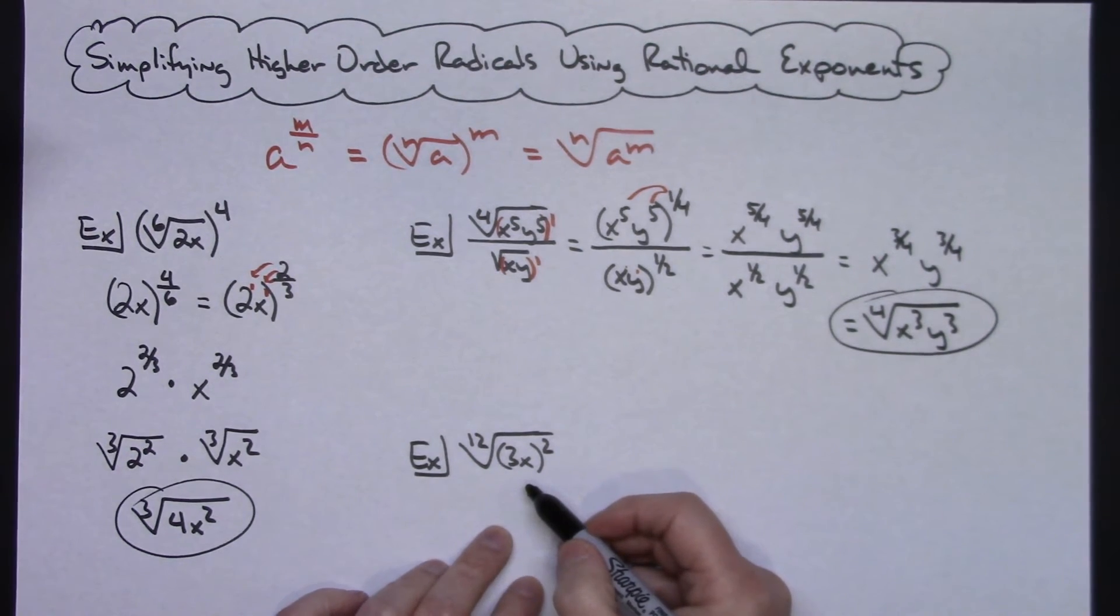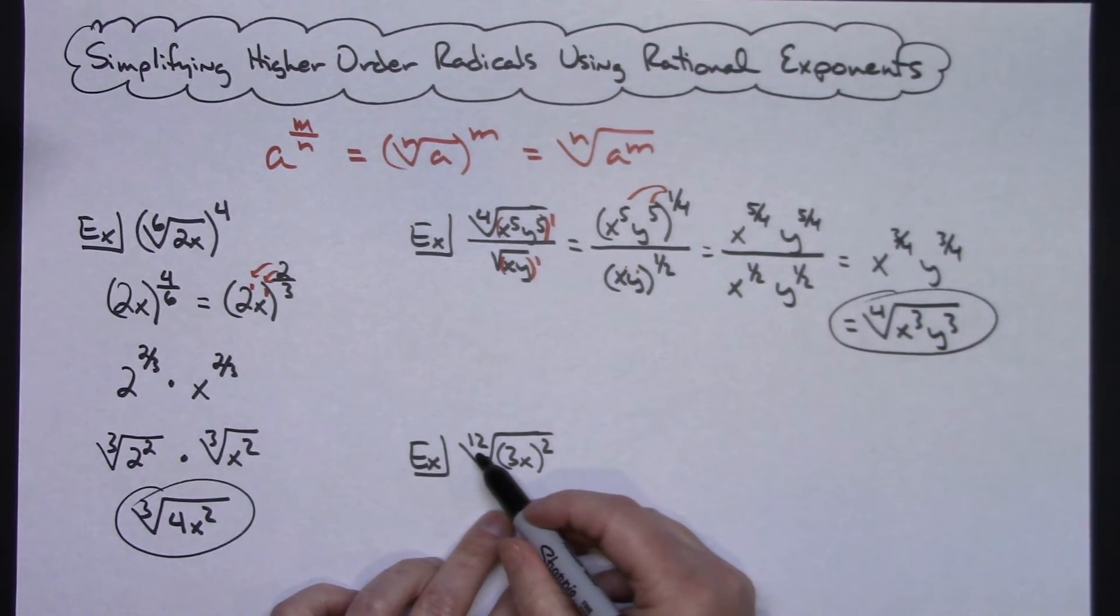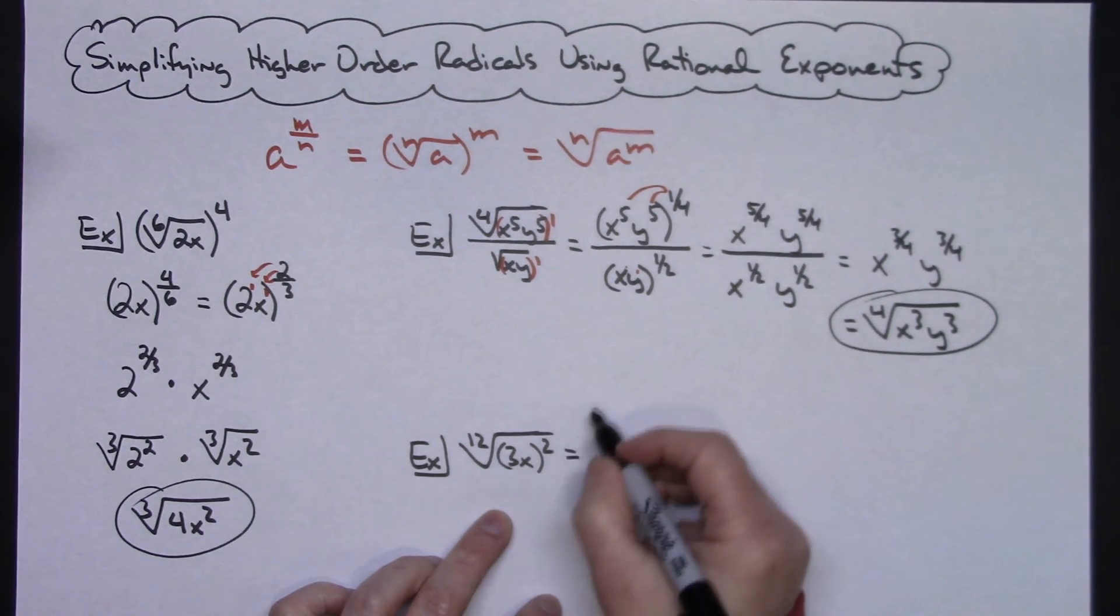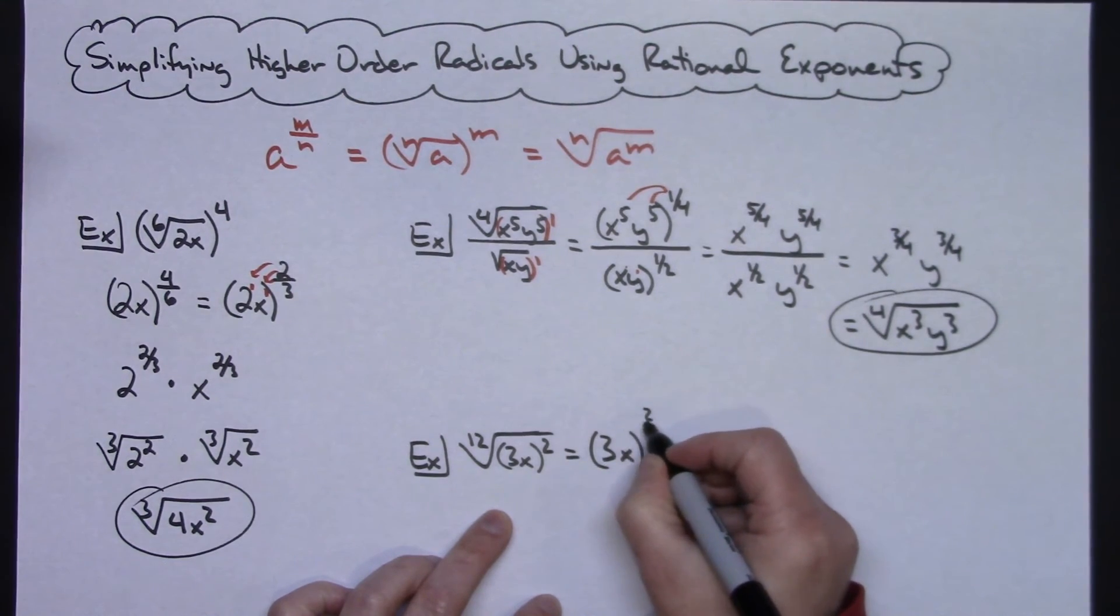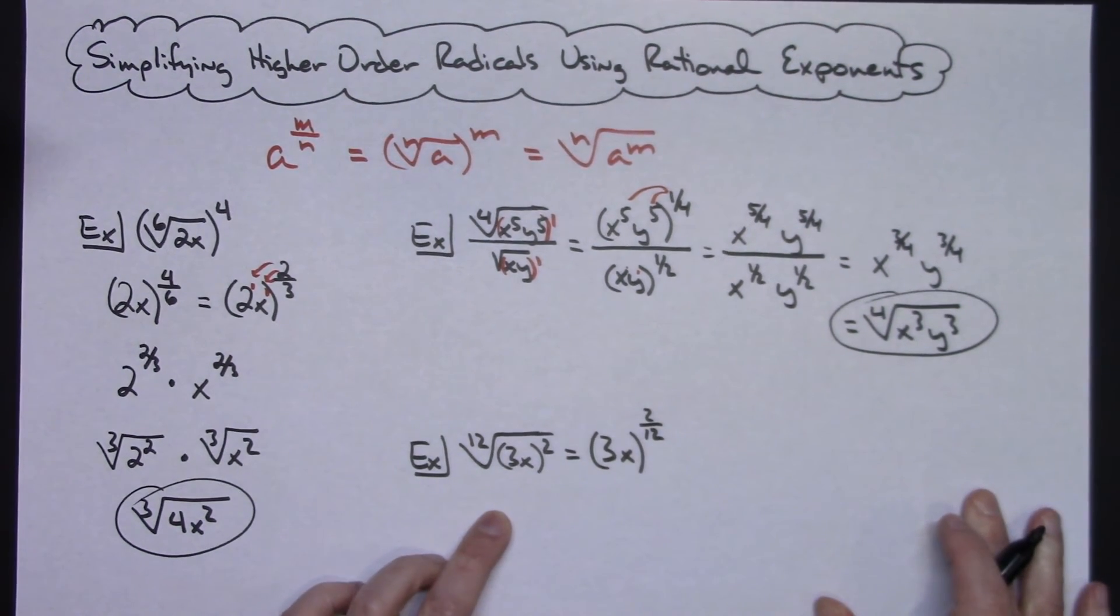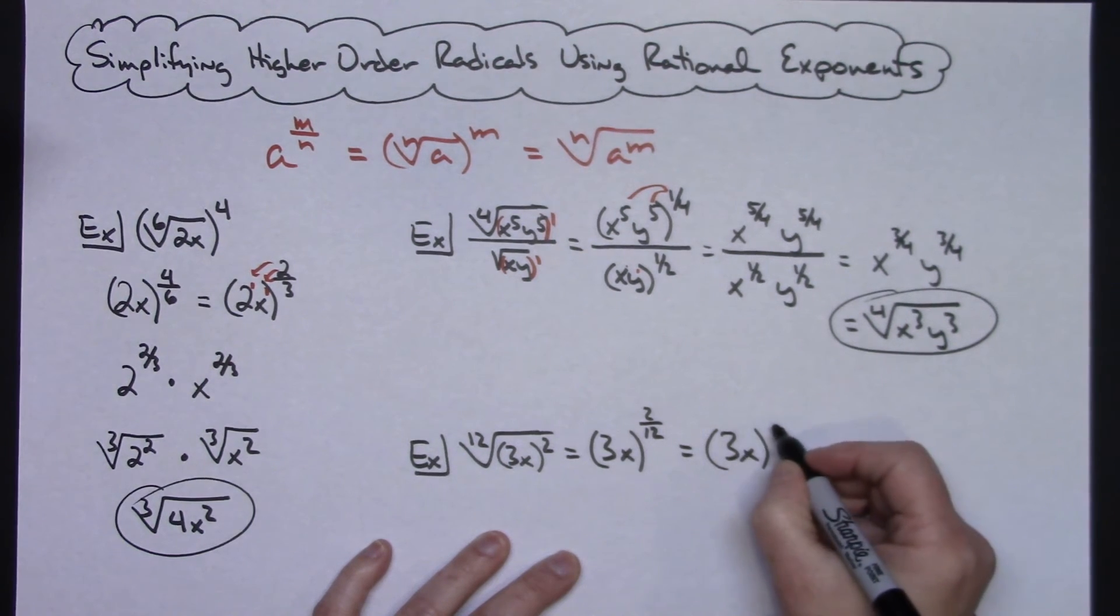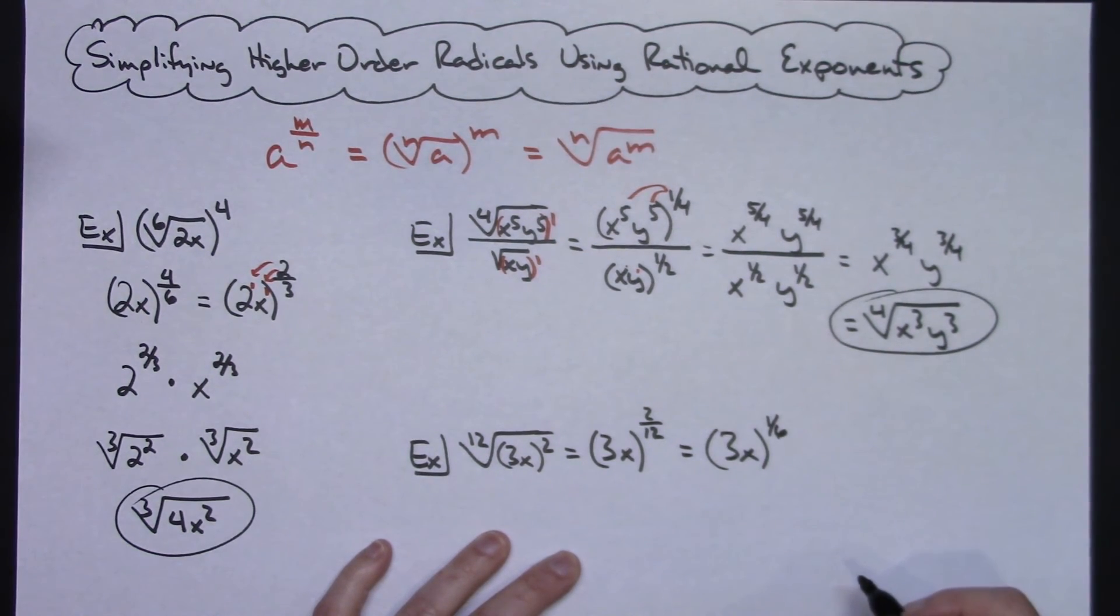So for my last example right here, I've got the twelfth root of 3x quantity raised to the second power there. So I'm going to implement the rule and pull it out to the 2/12 power. So I'll have 3x raised to 2 over 12. Now I've got a fraction there. I can reduce that to the lowest terms. So 3x raised to the 1/6 power.